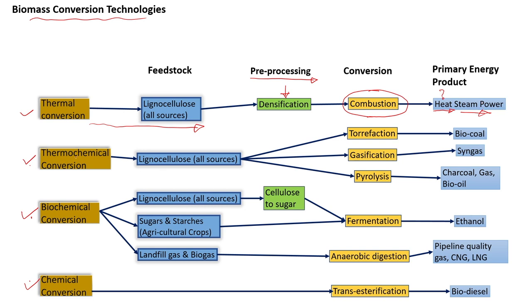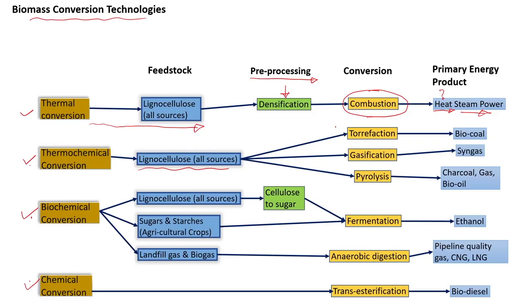In thermochemical conversion processes, the raw material undergoes certain pre-processing stages that depend mainly on the process of choice. There are 3 different types of thermochemical conversion processes available: torrefaction, gasification, and pyrolysis.